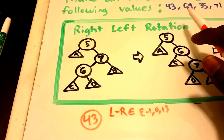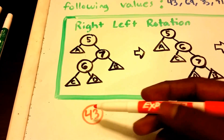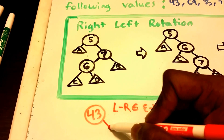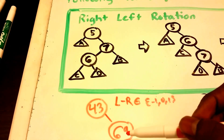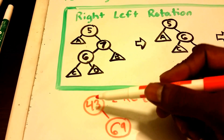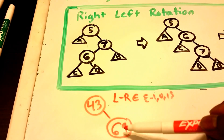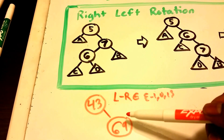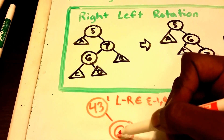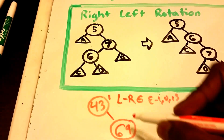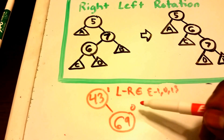Now let's insert the value 69 into our tree. 69 is greater than 43, so it's going to go to the right. We insert 69 and check our balance. The height of the left subtree is zero but the height of the right subtree is one, giving a balance factor of 1 at the root. Node 69 has a balance factor of 0. Our tree is still balanced, because 1 and 0 are within that set.